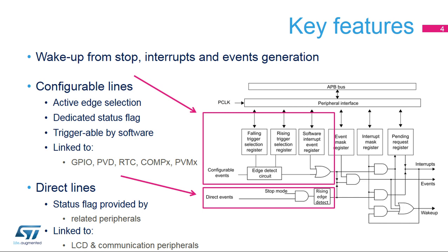These lines can wake up the processor from stop 0, stop 1, and stop 2 modes. Direct lines provide less configuration options, with status flags provided by related peripherals. They are linked mainly with LCD and communication peripherals.